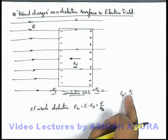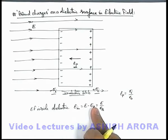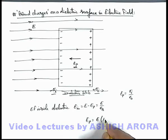Then on placing the value of σᵢ over here, you can see we are getting the magnitude of Eₚ is equal to E multiplied by (1 - 1/εᵣ).